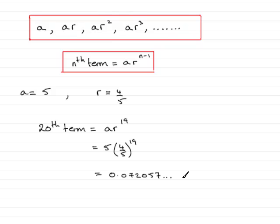And we've been asked to give the answer to three decimal places. So that's going to be equal to 0.072. Make sure you write 3dp in afterwards.